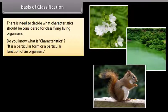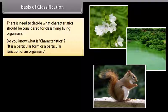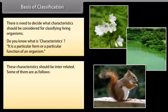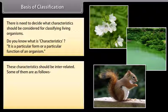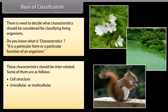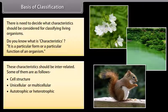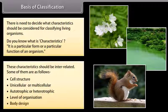A characteristic is a particular form or a particular function of an organism. These characteristics should be interrelated. Some of them are as follows: cell structure, unicellular or multicellular, autotrophic or heterotrophic, level of organization, and body design.